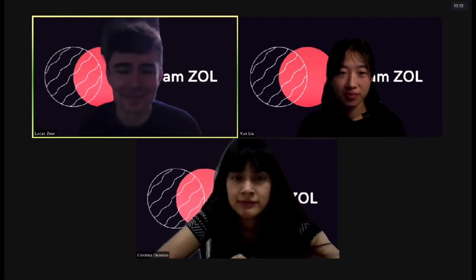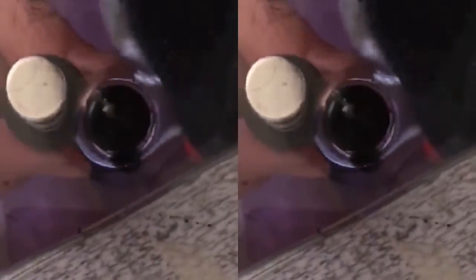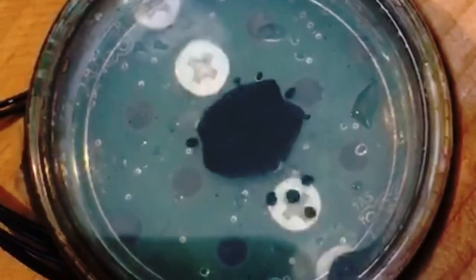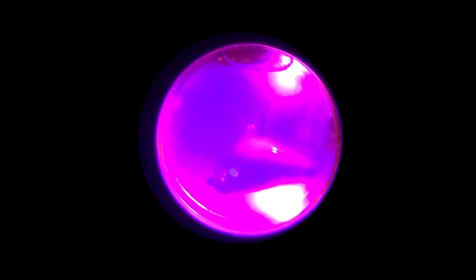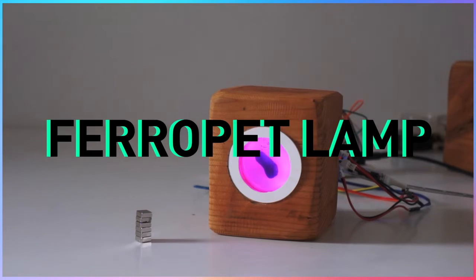With my teammates, Yue and Christina, we experimented with ways to take advantage of what we learned in terms of making self-cleaning coatings with hydrogels, electropermanent magnetic matrices for lower power consumption, and custom coils to eventually produce the ferro-pet, a dancing ferrofluid lamp.